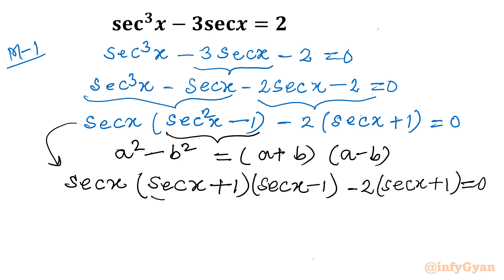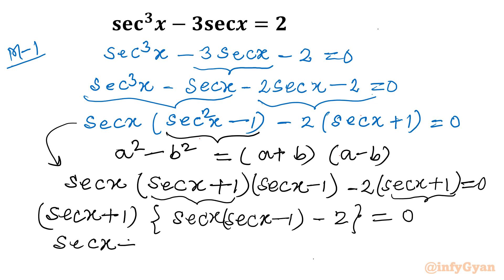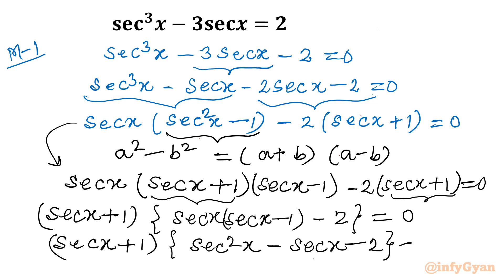You can see that (sec x + 1) is a common factor. Taking it common gives (sec x + 1)[sec x(sec x − 1) − 2] = 0. Expanding the bracket: (sec x + 1)(sec²x − sec x − 2) = 0. This is a quadratic equation in sec x.